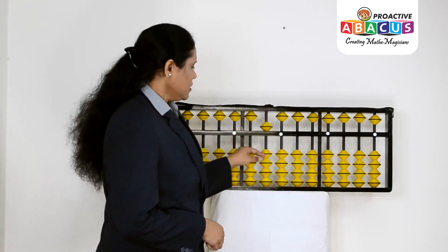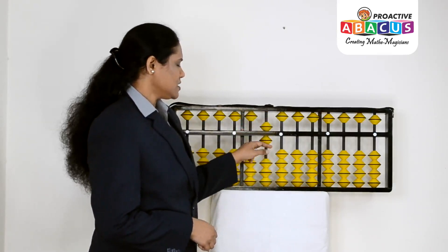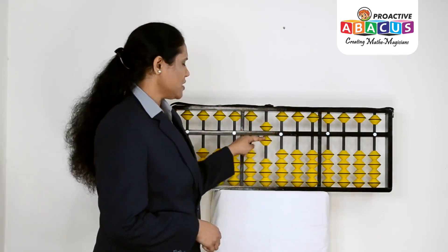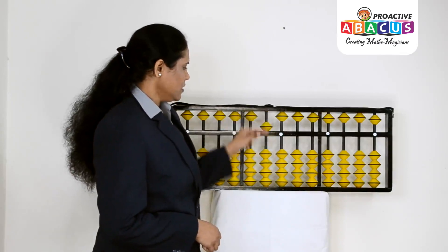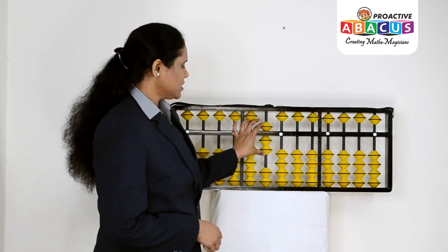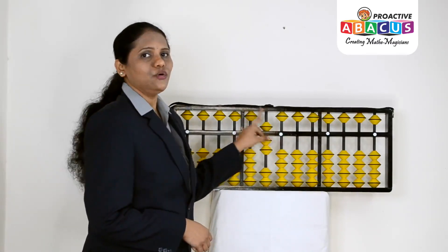For 60, upper deck is 5 and tens place is 1, that's 6. Unit place is 0, so 60. For 70, 2 beads: 5 plus 1 is 6 plus 1 is 7, unit place is 0, that's 70.